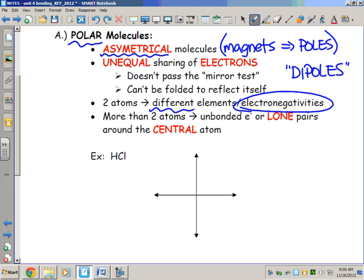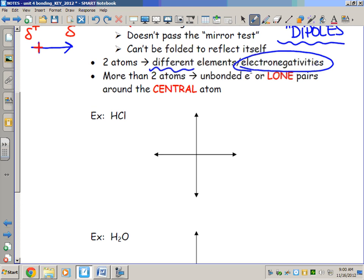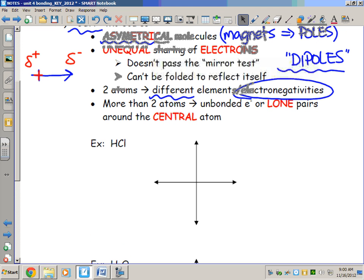Atoms of two different elements will always have at least slightly different electronegativities, which means they have different desires to gain electrons, different pull on the electrons within the bond. That means the electrons are going to spend more time with the more electronegative element and less time with the less electronegative element. What we end up with is a dipole. This is how we illustrate a dipole with this arrow. We're going to generate a partial positive end and a partial negative end. The more electronegative element will be the more negative end of the bond, the less electronegative element will be the more positive end.